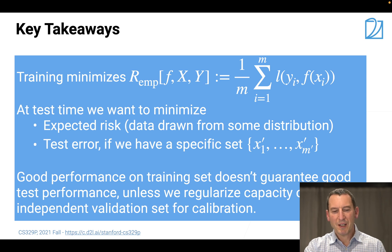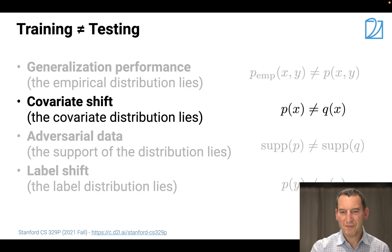Let's just quickly recap the key takeaways from that issue about empirical averages versus expectations. Training minimizes typically some empirical risk—it's the sum (1/m) Σ l(y_i, f(x_i)) for i from 1 to m. But at test time what we really want is to minimize the expected risk for data drawn from some distribution, and then you compute the test error if we have some specific set. You can use validation in order to get more reliable estimates. The last word of warning is that doing really well on the training set means exactly nothing. You can get amazing performance on the training set, but unless you actually regularize properly it's no use. That's the first part of this course.